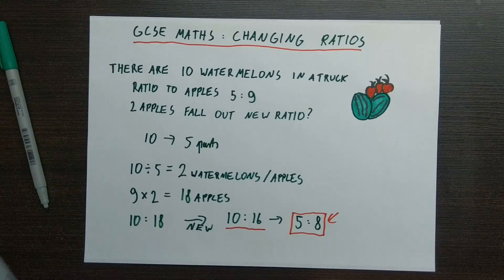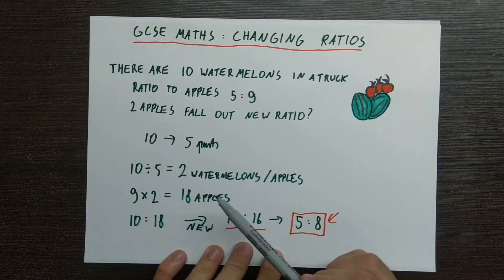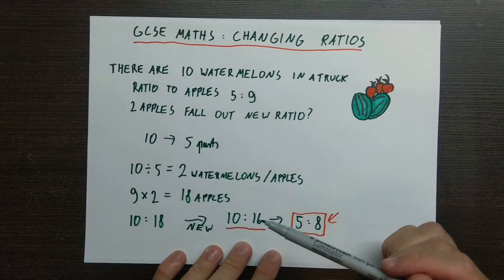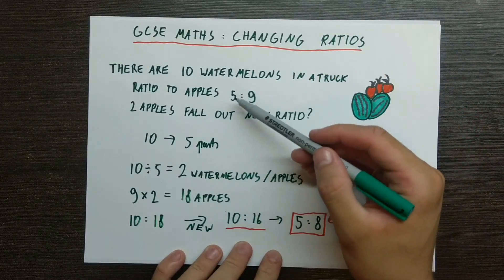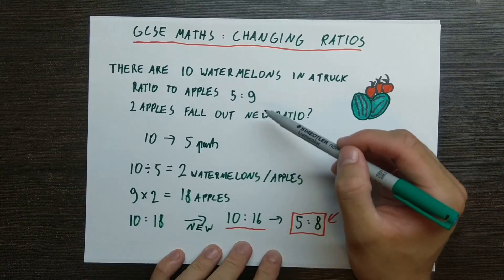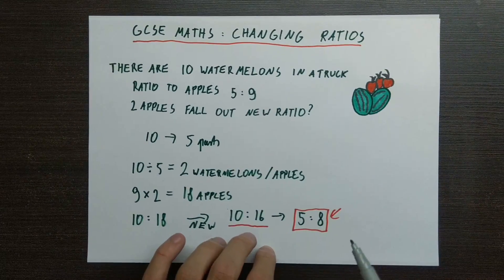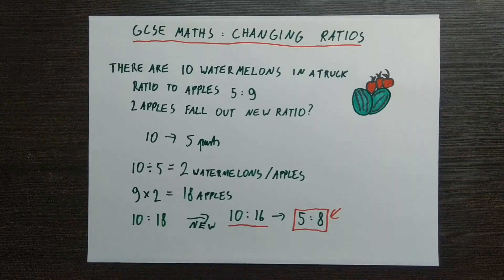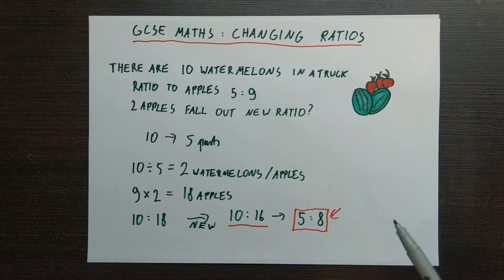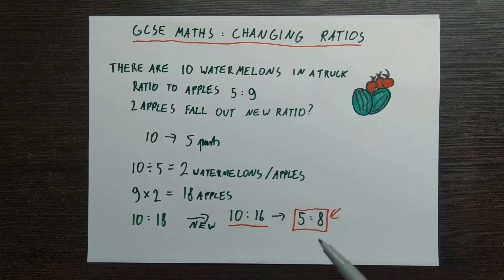That's the proper textbook way of doing this. Now if you wanted to find the original ratio of 10 to 18, you could have done that by scaling up, because we know it's 5 parts and 10 watermelons, so you multiply both sides by 2 and you're done. But this textbook method will work every time, which is why I chose to show it rather than scaling up, which can sometimes be inconvenient. That's how we deal with finding new changed ratios.